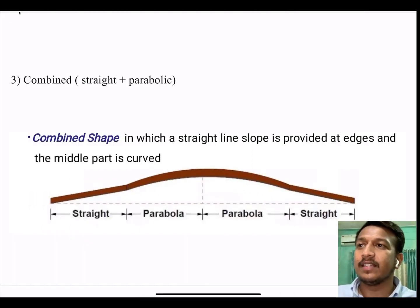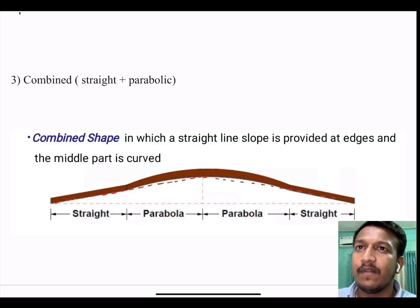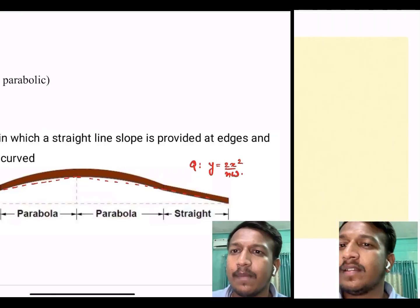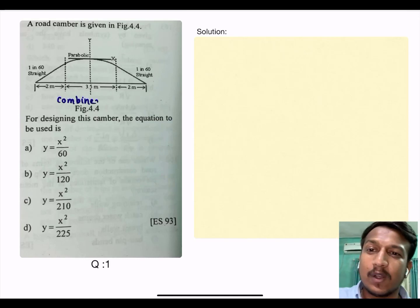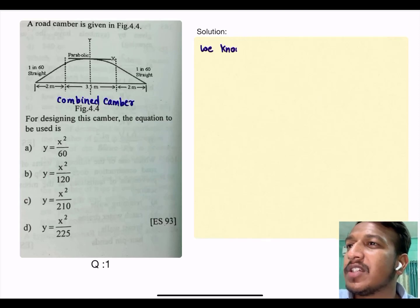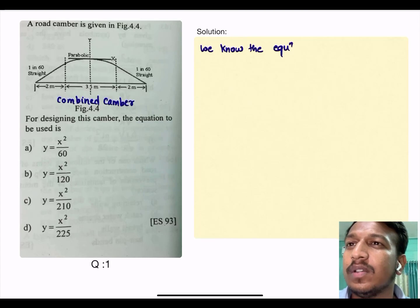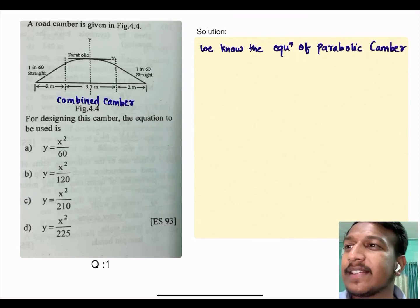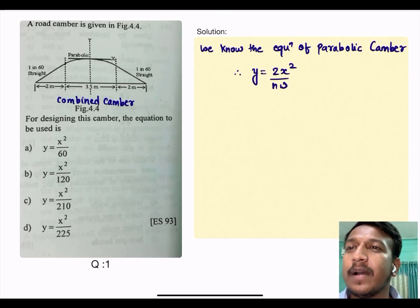Third type of camber is the combination, that is combined straight line and parabolic. Combined shape in which a straight line is provided at the edges and middle part is curved. We know the concept that central height of all types of camber is same. So if question comes, you can use parabolic formula, that is y equal to 2x square by nw.